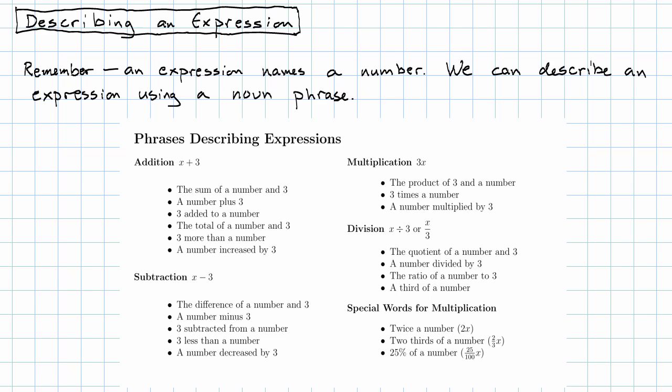The most important thing to be aware of in looking at this list is that in division and subtraction, order matters. In particular, we see that in subtraction, these two descriptions reverse the order that the symbols are written in the expression. So three less than a number means x minus three, not three minus x. Other than that, all of the descriptions of subtraction and division name the numbers in order. And of course, order doesn't matter in addition or multiplication.